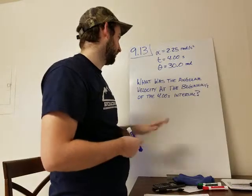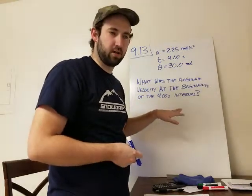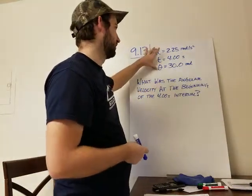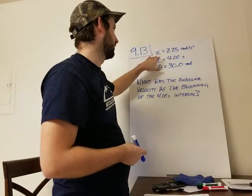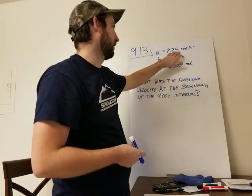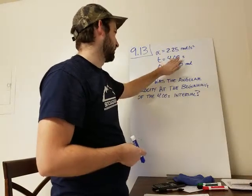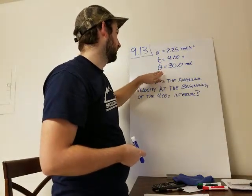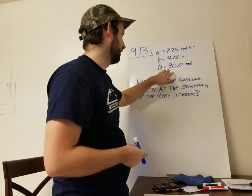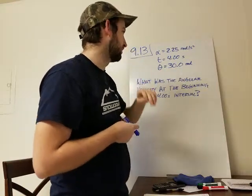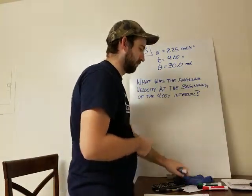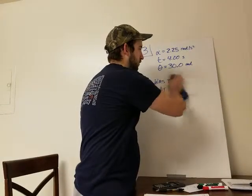So, I just rewrote the main part of the question here, and these values are what we know. We know that the acceleration is 2.25 radians per second squared, the time is 4 seconds, and the angle theta is 30 radians. I'm going to erase the question to give more room to work.